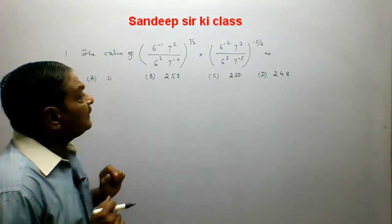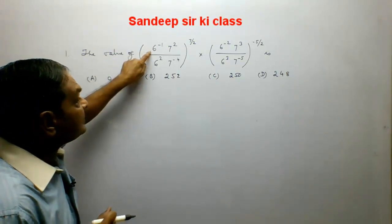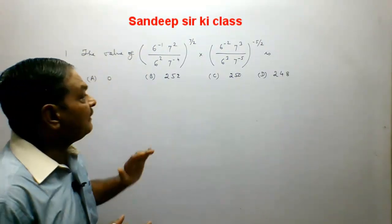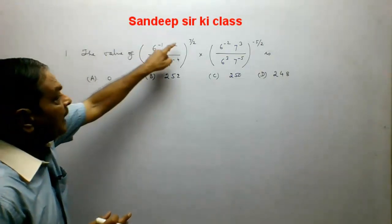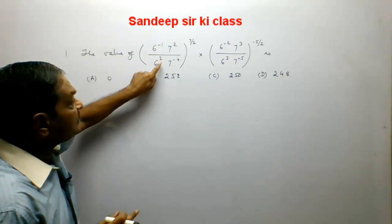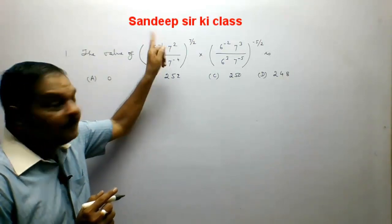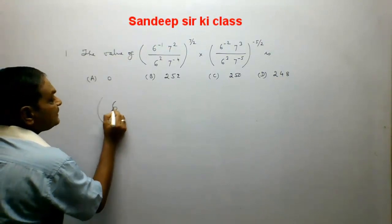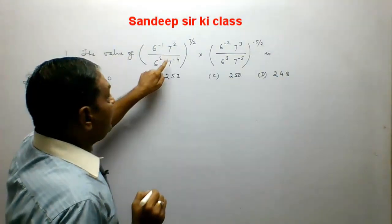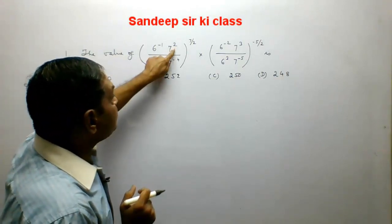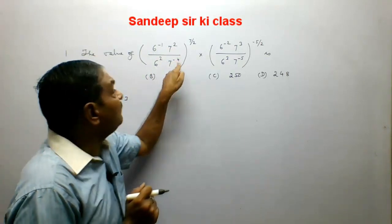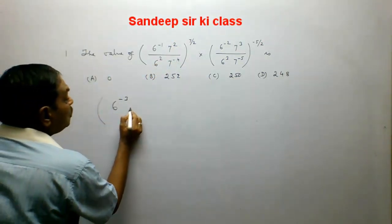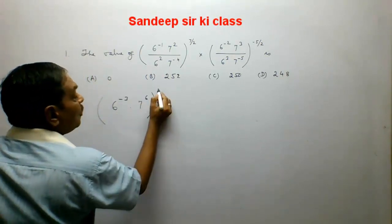Here we see that the base of indices is given either 6 or 7, so we will be clubbing the terms of base 6 and base 7. In the first bracket, it is 6 to the power minus 1 and 6 to the power 2. When 2 goes to the top it becomes minus 2, so 6 to the power becomes minus 3. For the terms of 7, powers are 2 and minus 4; minus 4 goes to the top becoming plus 4, so power becomes 2 plus 4 equals 6. So it is 7 to the power 6, whole to the power 7 upon 2.